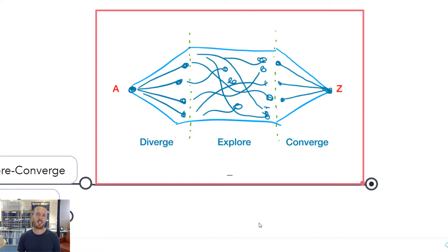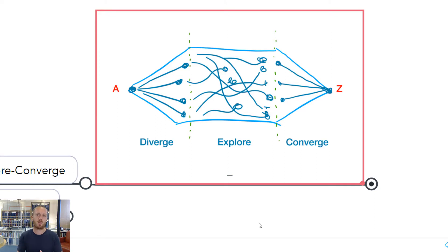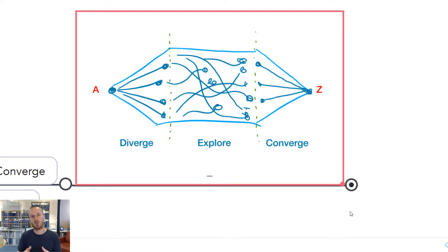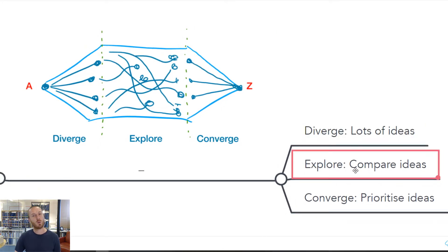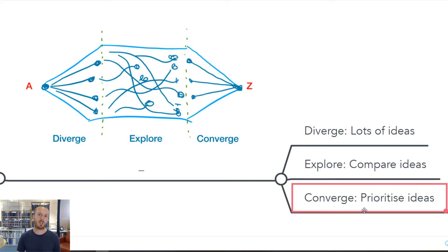Once we've got lots of ideas out, we want to bounce them against each other. We want to see which ones belong together or maybe build on each other, and also which ones fade away because they're not quite right. So we want to go through a good phase of exploration of those ideas, and then importantly we want to converge — define some priorities or actions from our brainstorm. So really it's about diverging to get lots of ideas, exploring to compare and understand them better, and then converging around prioritization.